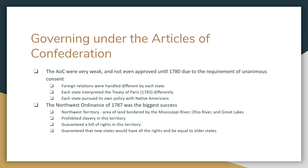The Articles of Confederation were extremely weak, and it was done that way on purpose because they thought it would be best — but they realized really quickly it didn't work. Written in 1777, they weren't even approved until 1780 because Maryland refused and they needed all 13 states to agree. Foreign relations were handled differently by each state. Each state interpreted the treaty that ended the American Revolution differently — some still took land from loyalists, some didn't. Each state pursued its own policy with Natives. It was a mess.